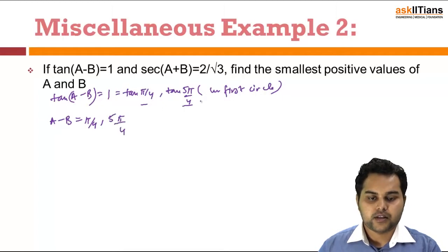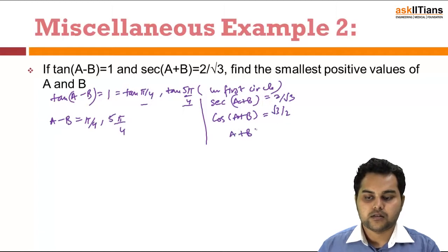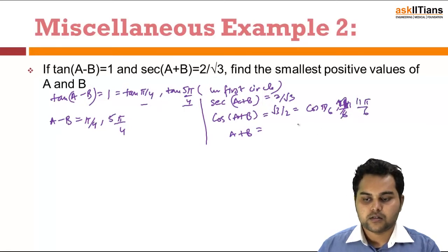Checking sec(a - b) = 2/√3, I get cos(a - b) = √3/2, so a - b = π/6 or -π/6 or 11π/6. Since -π/6 does not lie in the first quadrant, I keep 11π/6. So a + b can be π/6 or 11π/6.